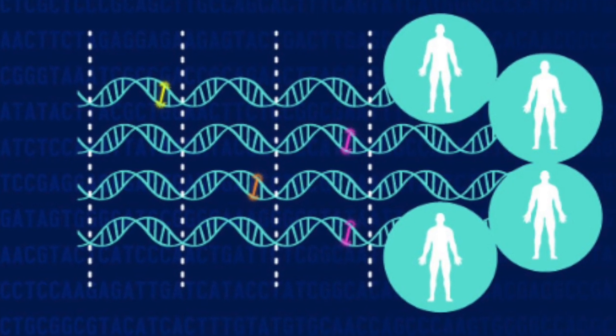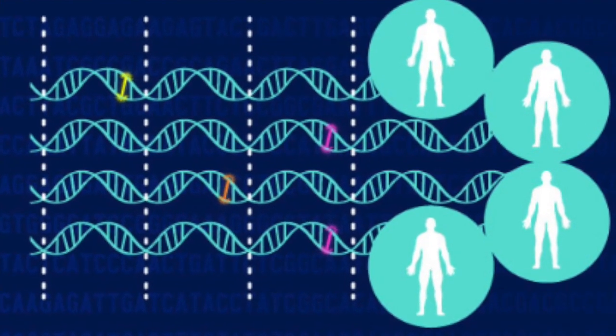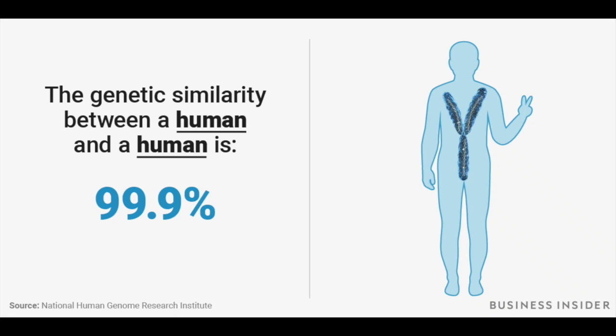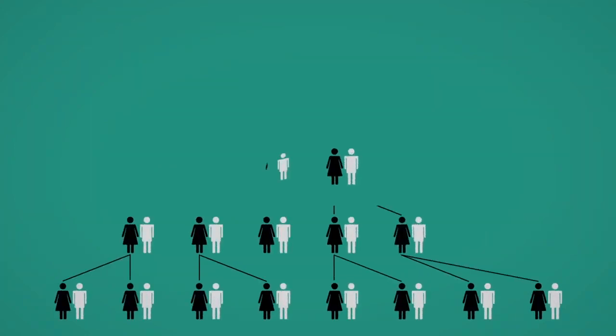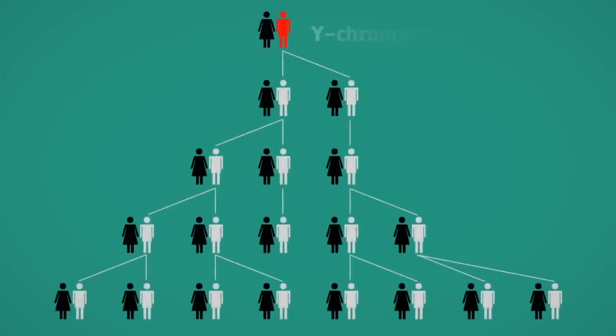Every single male Y-chromosome is nearly identical. There is extremely low genetic variation in the male Y-chromosome, and every single Y-chromosome in the world can be traced back to one single Y-chromosomal ancestor in the not-so-distant past.